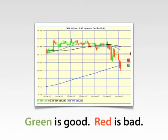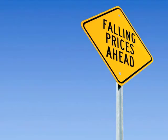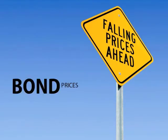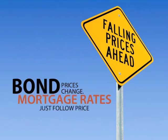But we'll make it simple for you: green is good and red is bad. Anytime you see green on this chart, it's good — it means bond prices are going up and rates are coming down. Anytime you see red, that's bad — it means bond prices are dropping and interest rates are going up. The point is that bond prices change, and mortgage rates just follow those prices.